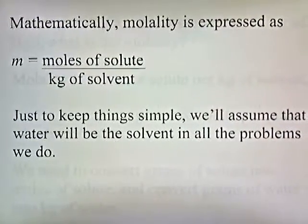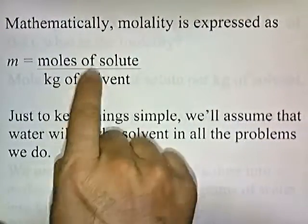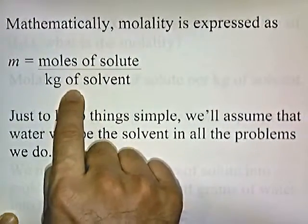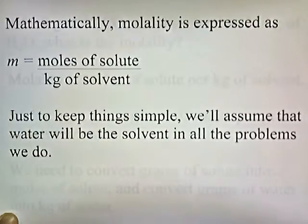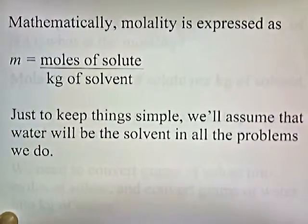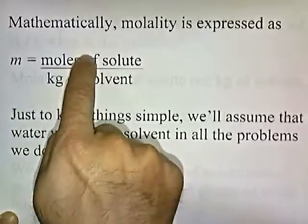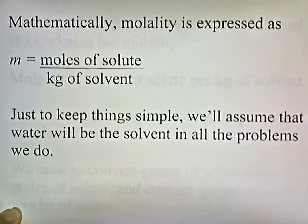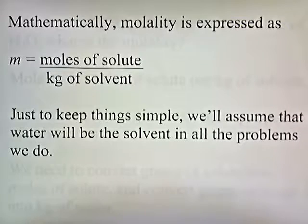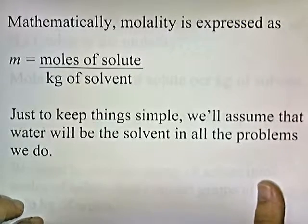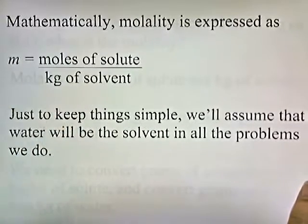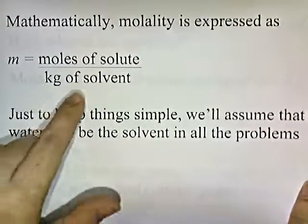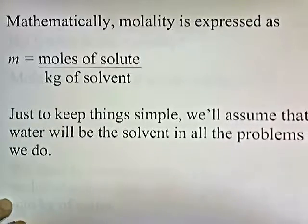Mathematically, molality is expressed as moles of solute per kilogram of solvent, and a little cursive M is the symbol for molality. This little cursive M means moles per kilogram of solvent. Just to keep things simple, we'll assume that water will be the solvent in all the problems that we do. It is possible to have molality solutions with different types of solvents, but water is going to be the solvent for all of our problems.